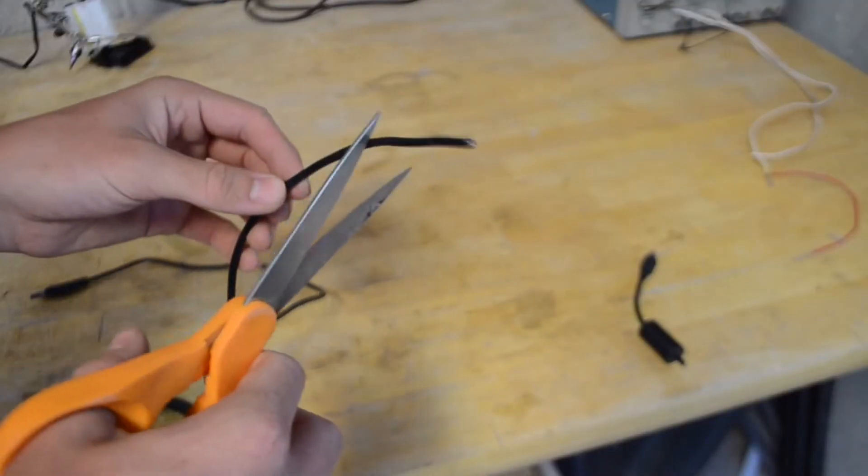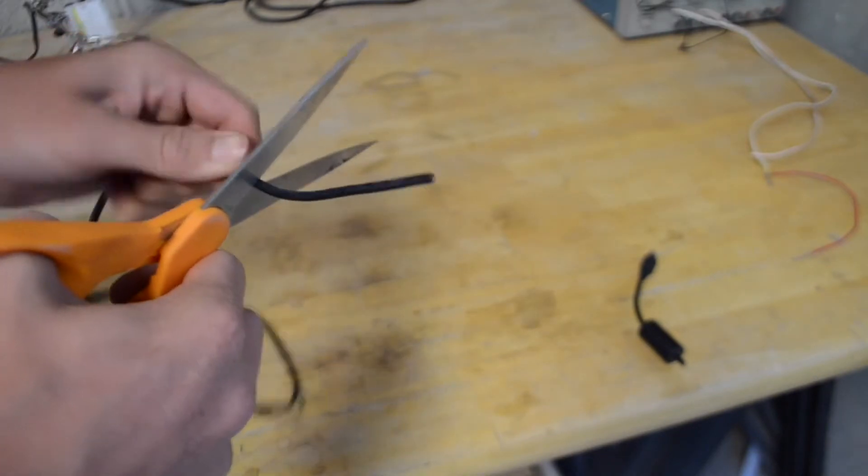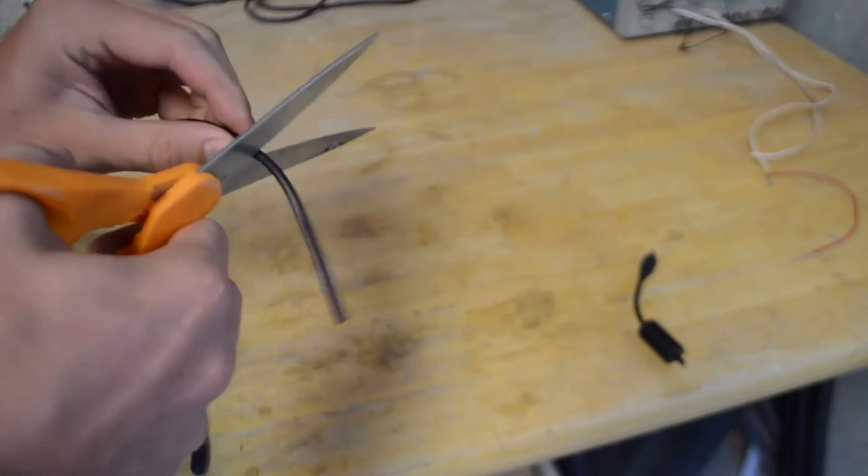Now take some scissors and gently cut around the wire. As you're cutting, make sure you don't cut through the wire but rather just remove the outer layer.